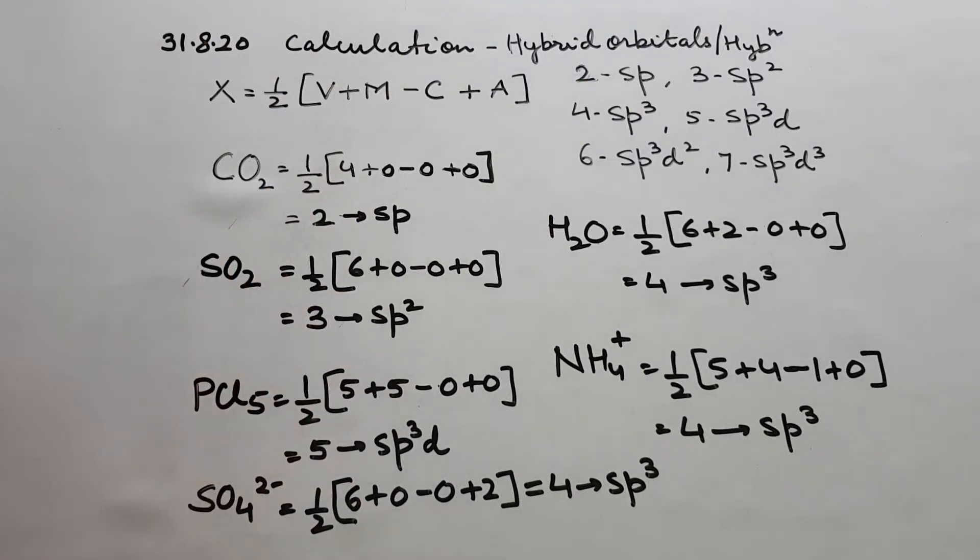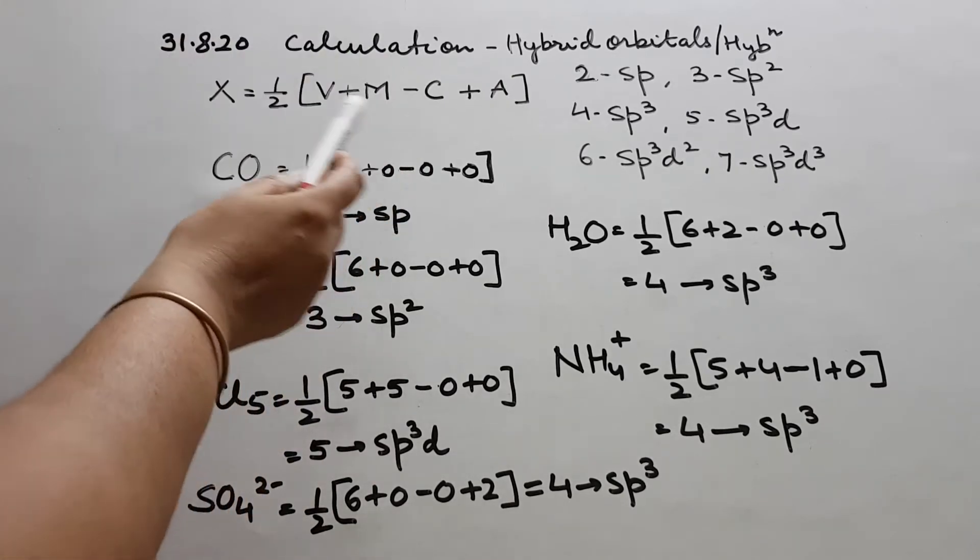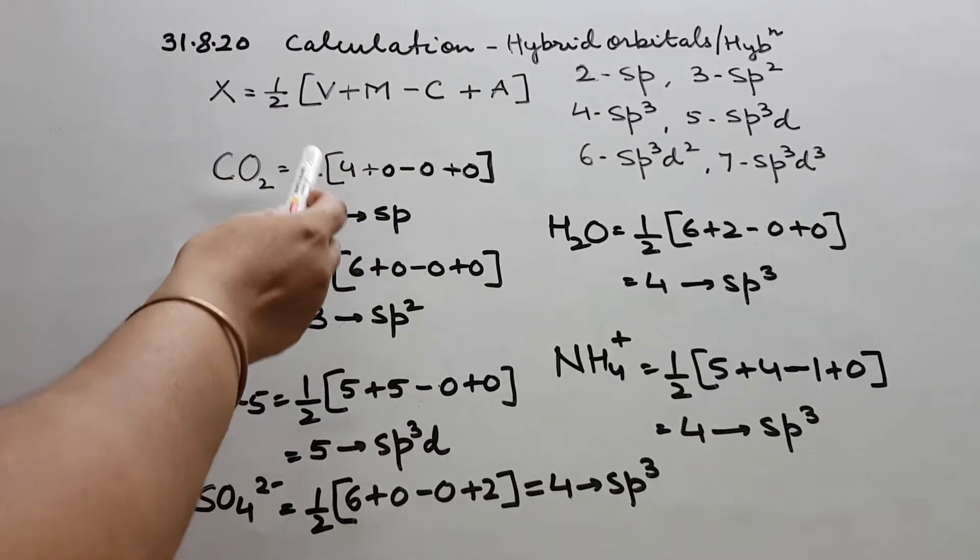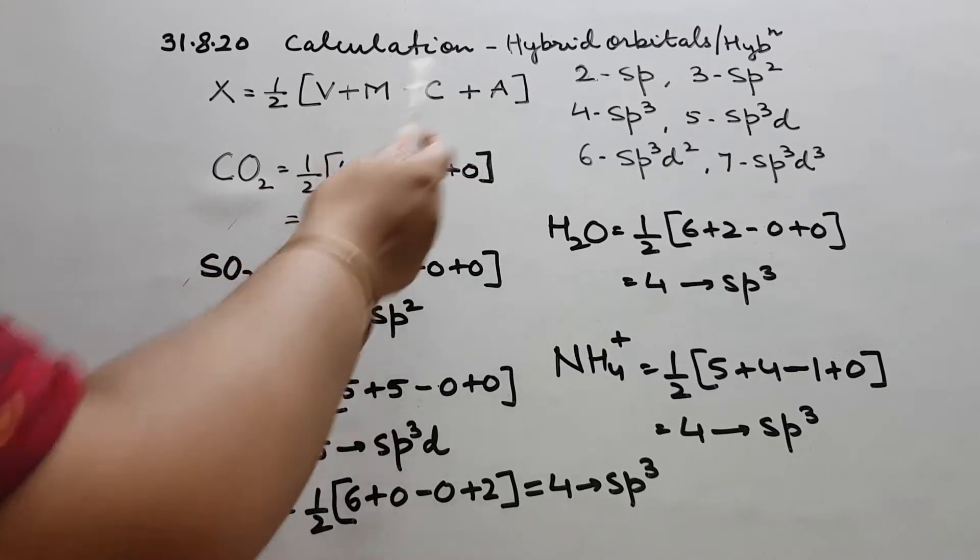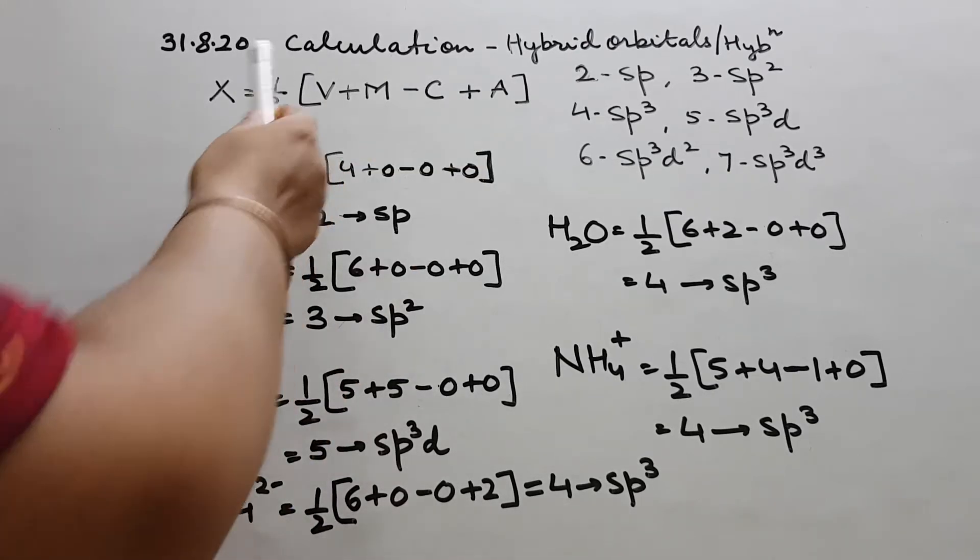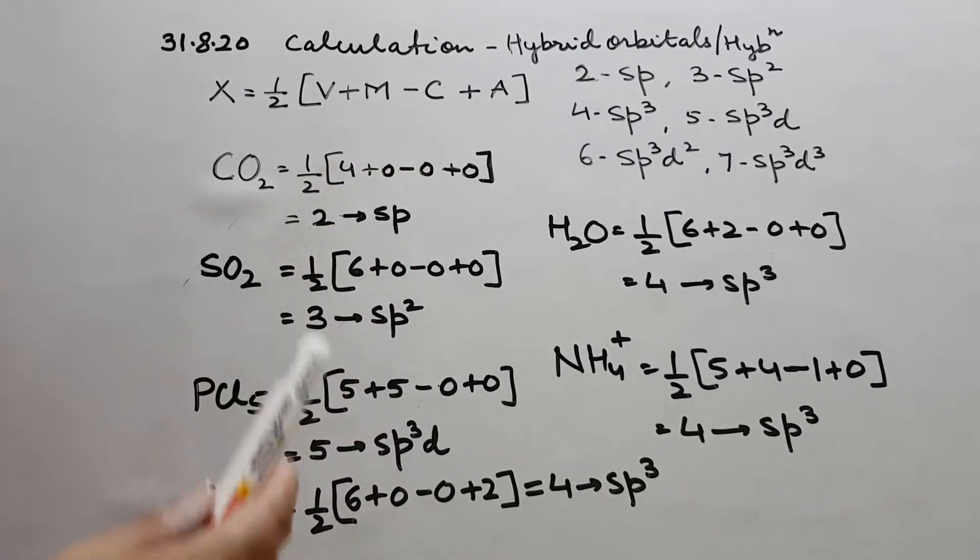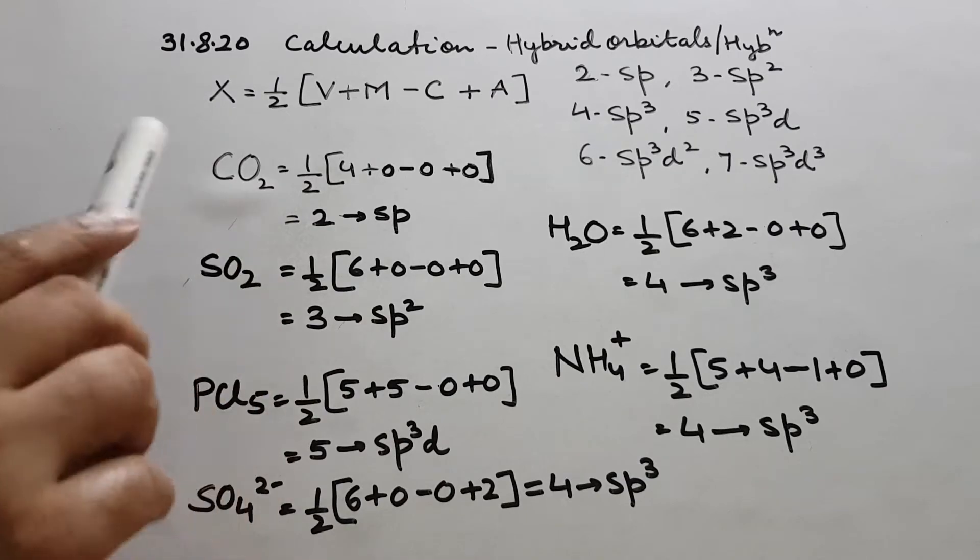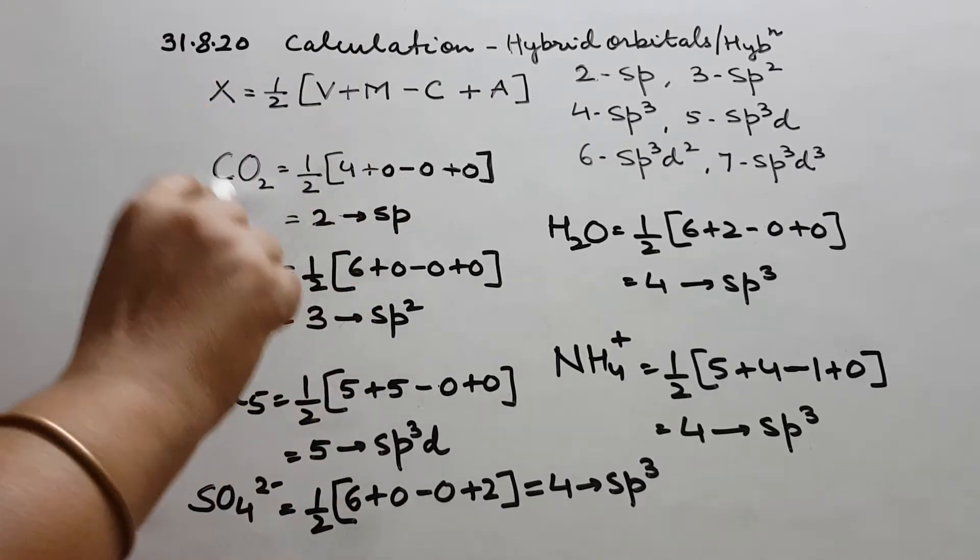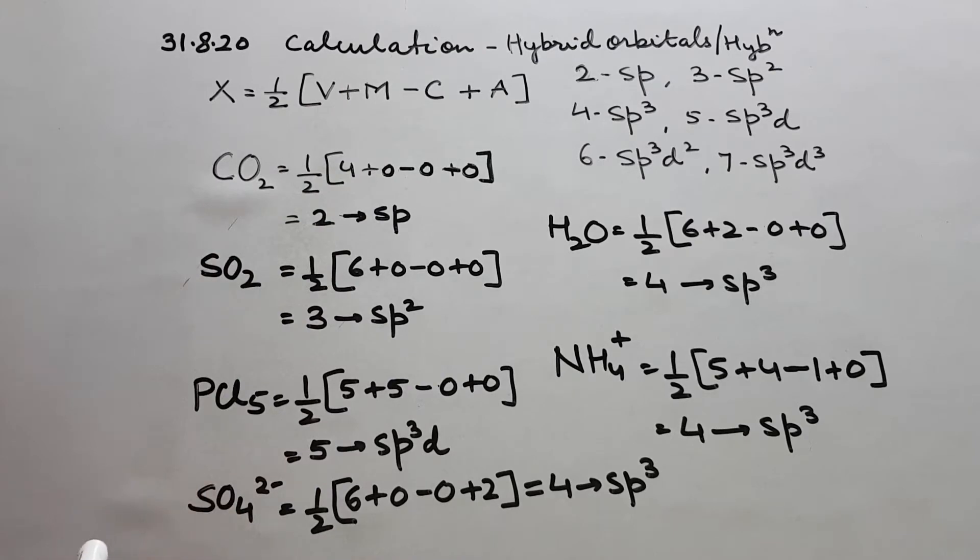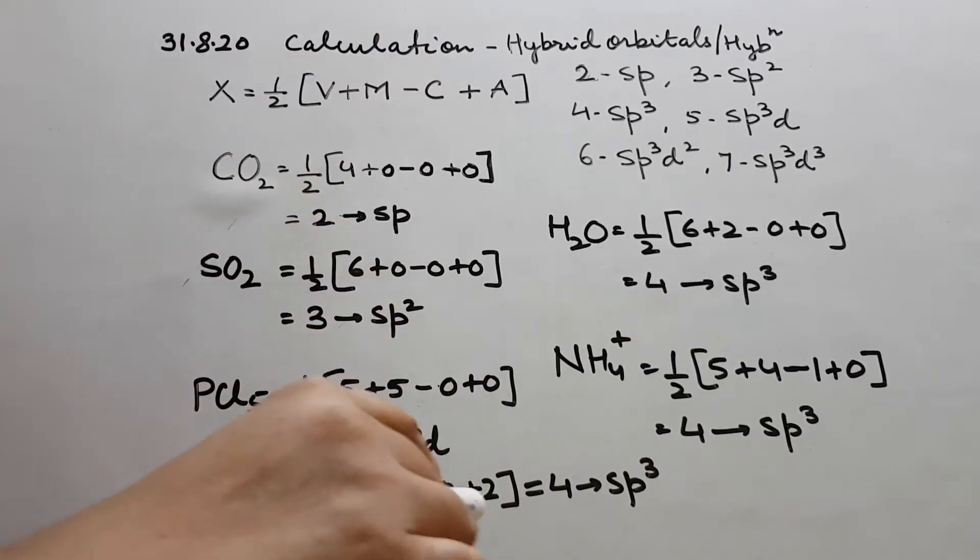So children, last Monday we had seen the formula x equals half v plus m minus c plus a. What was v? The number of electrons in the valence shell of the central atom. m was the number of monovalent atoms attached like Cl, Br, H etc if they are attached to central atom.